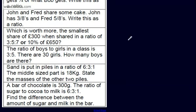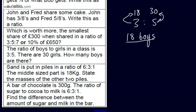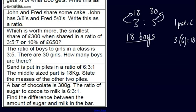The ratio of boys to girls in a class is 3 to 5. There are 30 girls. How many boys are there? Writing the ratio: 3 to 5, where 3 is boys and 5 is girls. We know there are 30 girls, so what did we multiply 5 by to get 30? The answer is 6. So we do exactly the same to the boys' side: 3 times 6 gives 18. So there will be 18 boys. One way to show this: 5 parts equals 30, so 1 part equals 6, and 3 lots of 6 is 18.